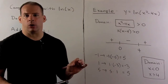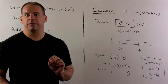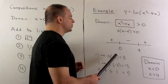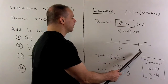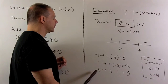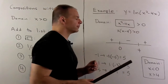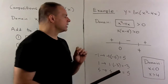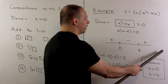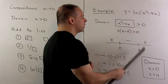Since x squared minus 4x is a polynomial, it's continuous everywhere. To find the regions where it's positive and negative, we find the zeros and check one point in each region. The zeros are zero and four. Checking points at minus one, one, and five gives us positive, negative, and positive. So the domain is x strictly less than zero or x strictly greater than four, with the endpoints excluded.